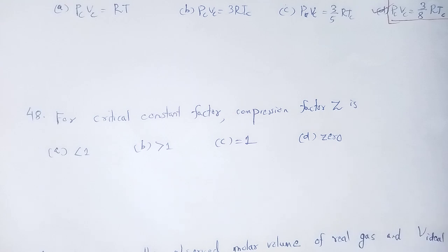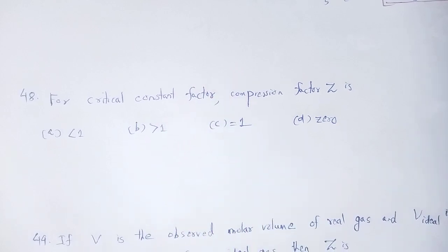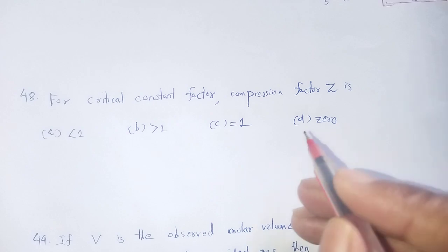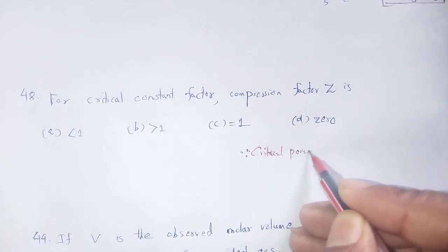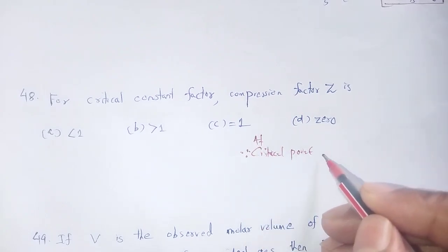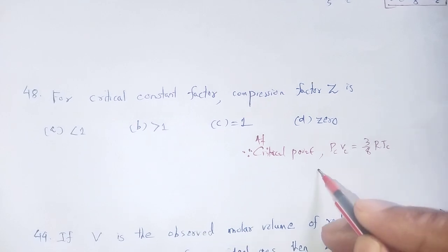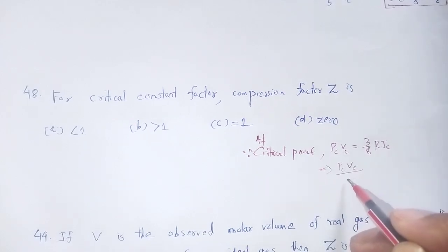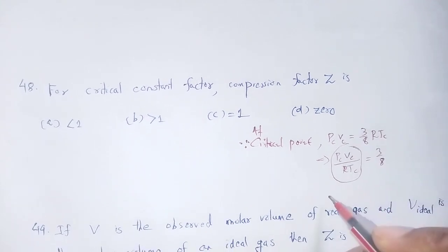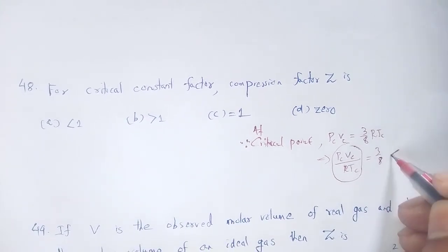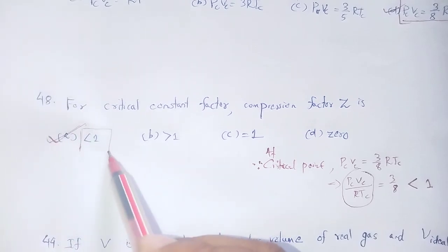Compression factor Z value at the critical point: analyzing at the critical point, Pc times Vc equals (3/8) times R times Tc. Therefore Pc Vc divided by RTc equals 3/8, which is a fraction less than 1. So the correct answer is option A: less than 1.